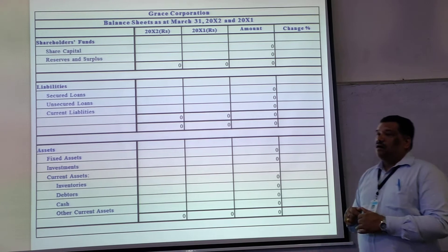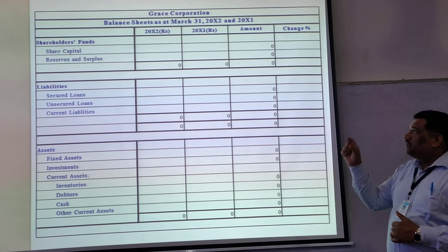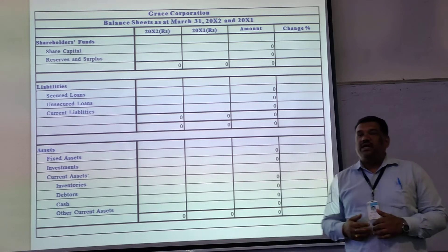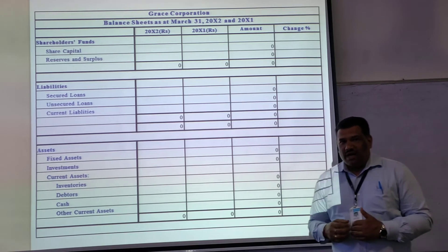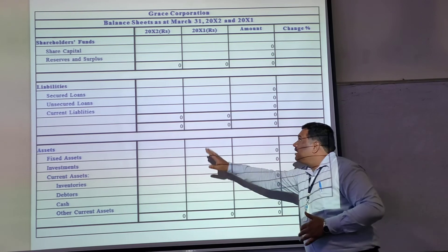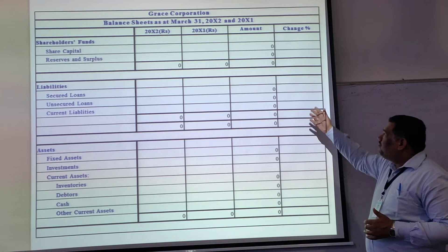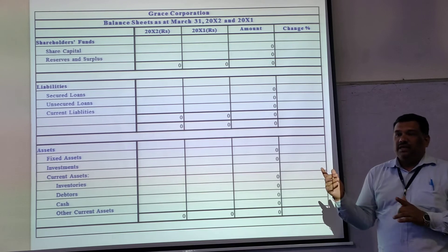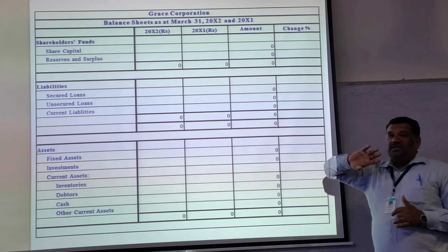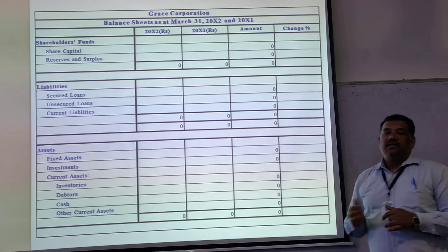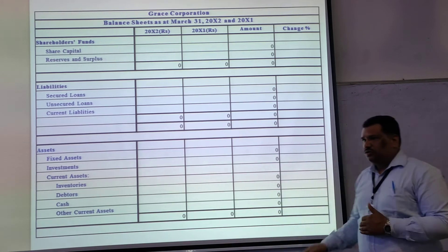This is a horizontal analysis report of the balance sheet of a company. The same format used in preparing the balance sheet is followed. In horizontal analysis, a comparison between two periods is made. The third column shows the change in amount — that is the absolute value — and the last column shows the percentage change of each item.